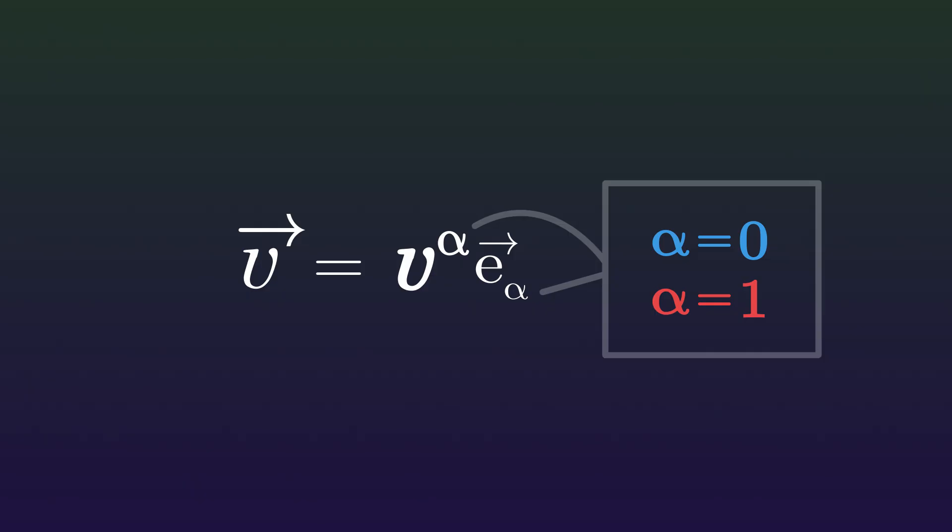This is the Einstein notation. When a Greek letter is repeated twice, once up and once down, it actually stands for a sum in which this Greek letter is replaced by each coordinate one by one.